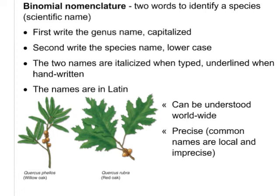Why Latin? Well, not everyone speaks English. If the names are written in Latin, scientists from all over the world can understand them and know exactly, very specifically, what they are. They are very precise. Common names are local and imprecise — people often call things descriptive words referring to a very local variety of some organism. So we use the Latin name to make it more universal and more precise and accurate.